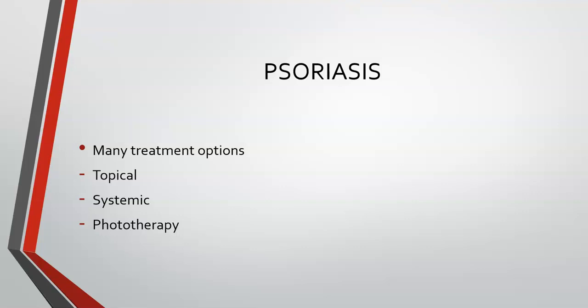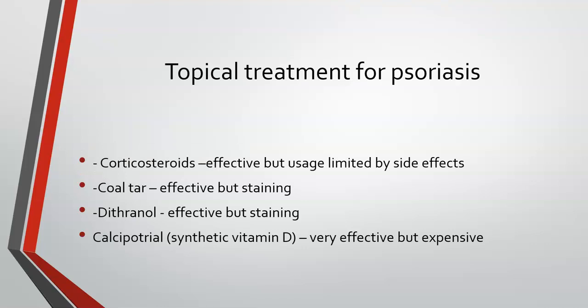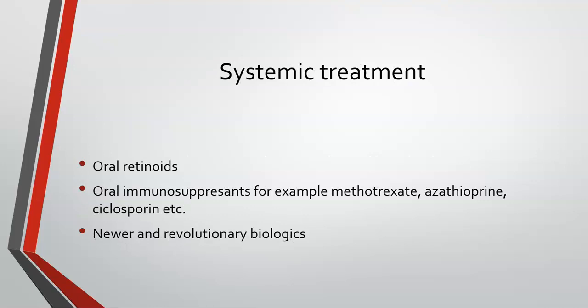Now, the final condition in this lecture: psoriasis. There are many treatment options — topical, systemic and phototherapy. Topical corticosteroids are commonly used and effective, but as we have seen, there are many side effects. Two unique topical medications for psoriasis are coal tar and dithranol, and also a synthetic vitamin D analogue, calcipotriol, which is very effective but very expensive. Systemic treatment may be needed for widespread psoriasis or those not responding to topical treatment, such as oral retinoids, oral immunosuppressants and newer biologics — but these should only be prescribed in a tertiary hospital by a qualified dermatologist.